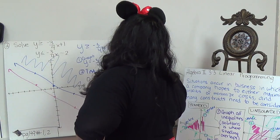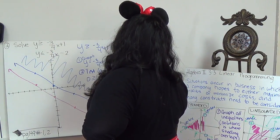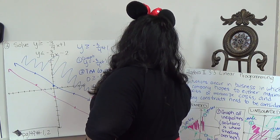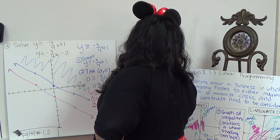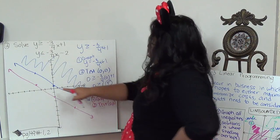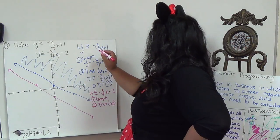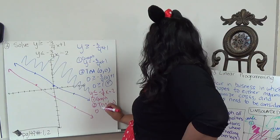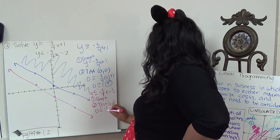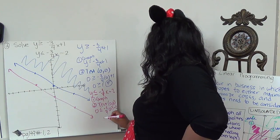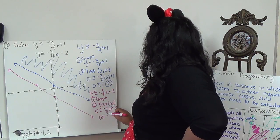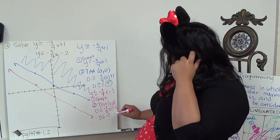And then I'm going to, so my first thing was to graph, my second is to test 0, 0, because that's also not on the point. So into the original equation here, so 0 is less than or equal to negative 3 fourths times 0 minus 2, 0 is less than or equal to negative 2. That's false.